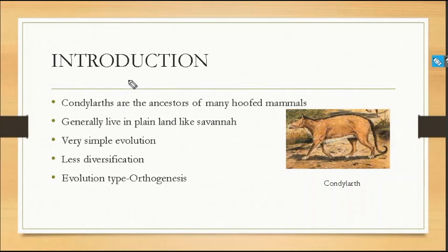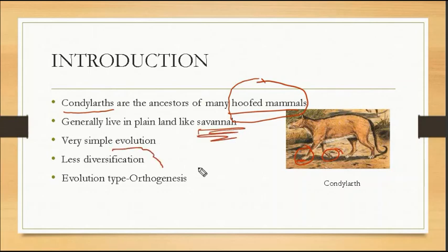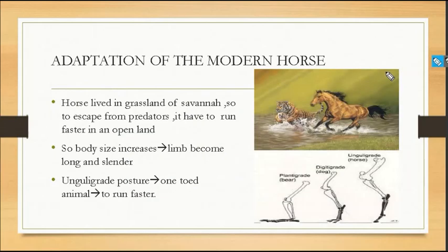In the introduction, the horse is derived from hoofed mammals. These hoofed mammals are the ancestors of many hoofed mammals. The first one is derived from the condylarths, which are the ancestors of many hoofed mammals. Generally, they live in plain land like savanna, coat, and grassland. It is very simple evolution with less diversification; the genesis and evolution type is orthogenesis.